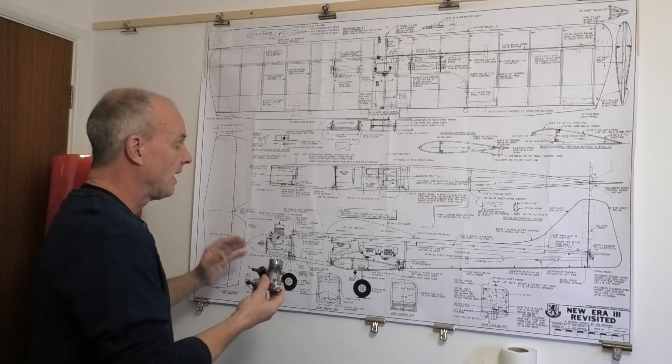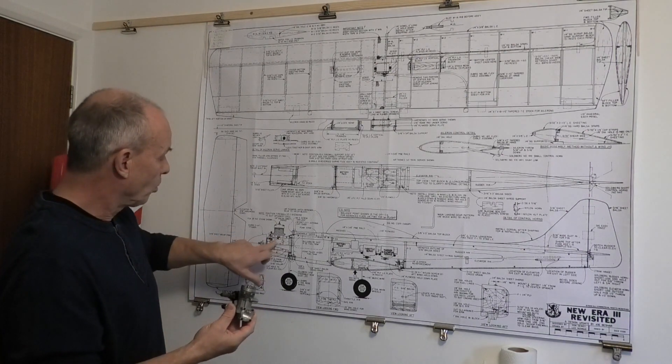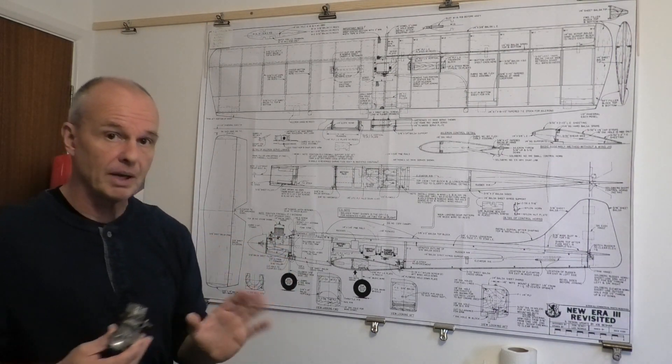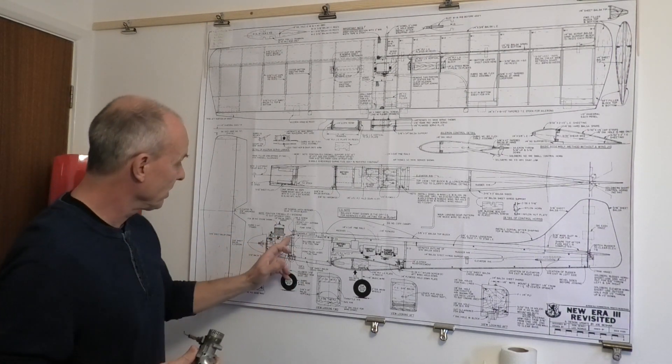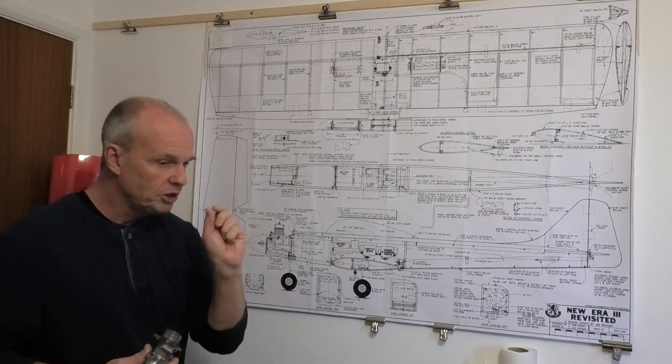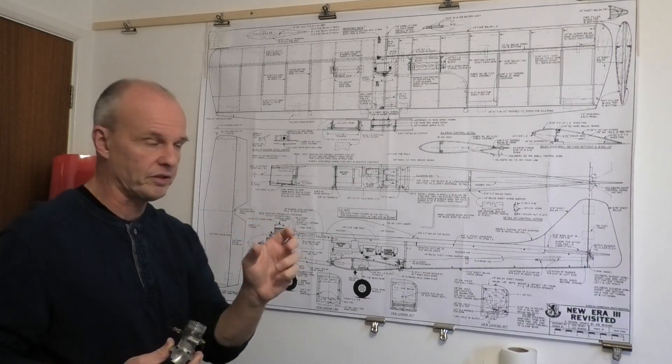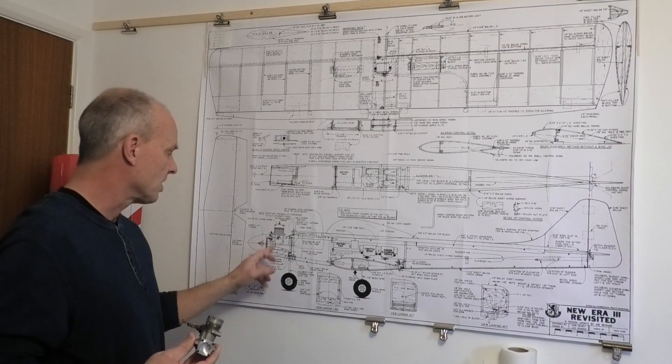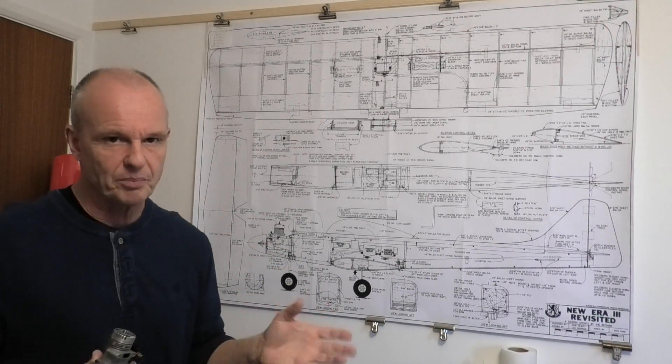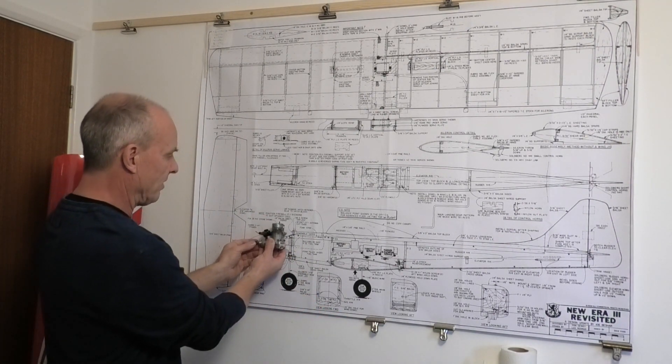So what I'm probably going to do, although I haven't made a final decision yet, is move the firewall back just a small amount, maybe a quarter of an inch, and extend the fuselage maybe an eighth of an inch, something like that, just to allow this to fit in.